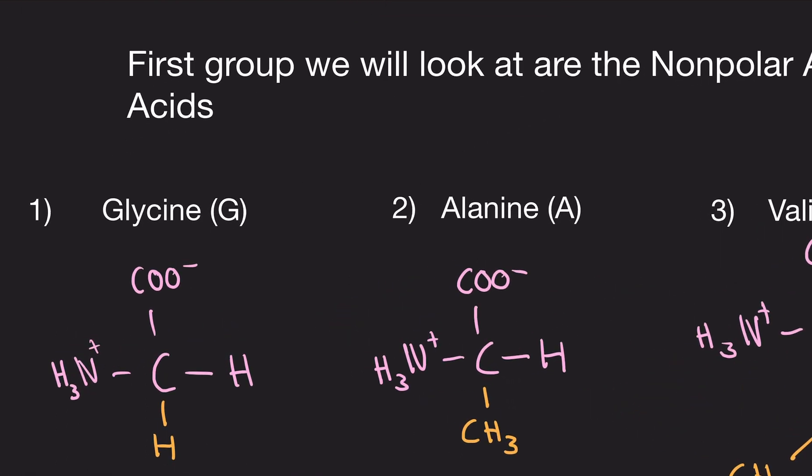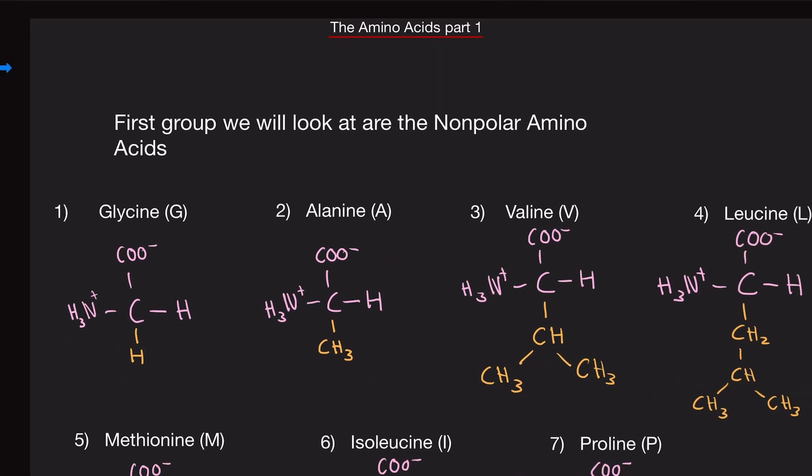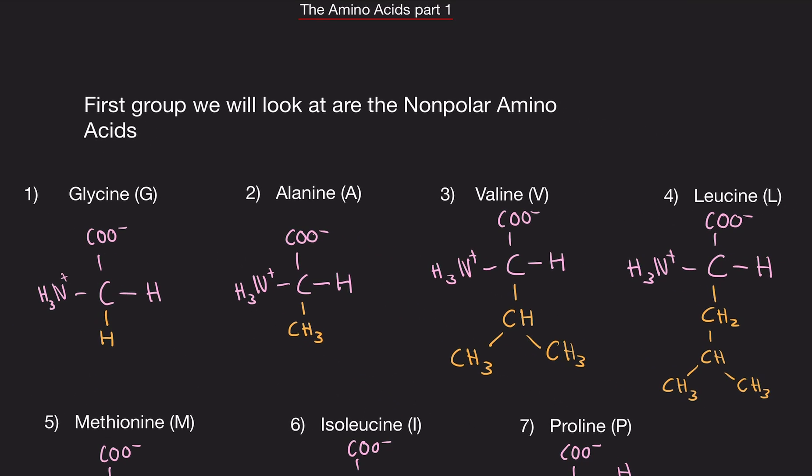For example, glycine is a G, but we also have glutamate, which starts with a G, but its abbreviation is not G. So just be advised, it's not always the first letter of the name. So let's begin.